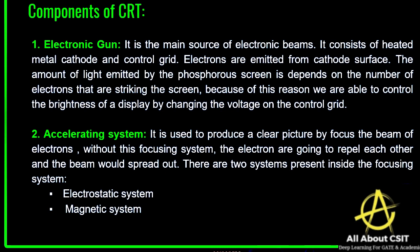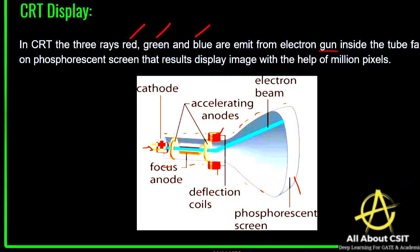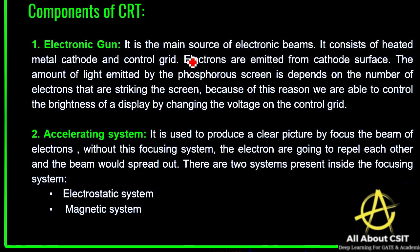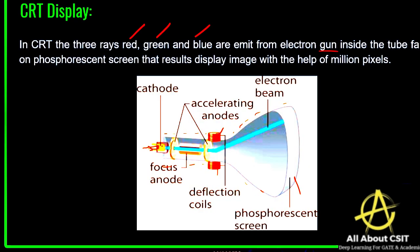If you understand the components of the CRT, you can easily understand its working. The first component is the electron gun, which is the main source of electronic beams. The electron beams touch the phosphorescent screen, and that is how the image is displayed. The electron gun is the main source of electronic beams.